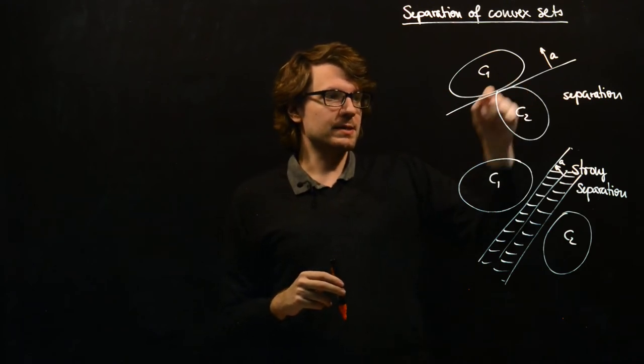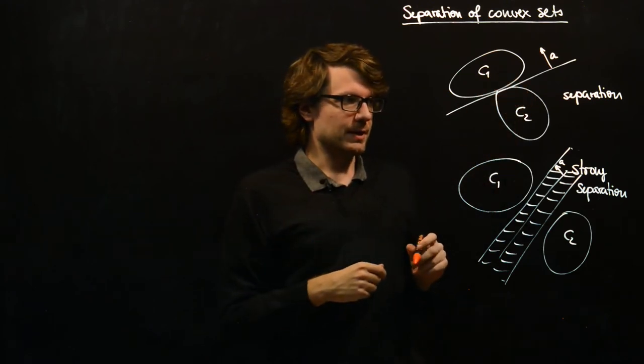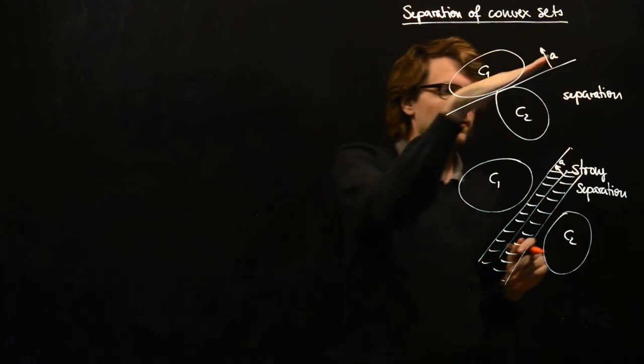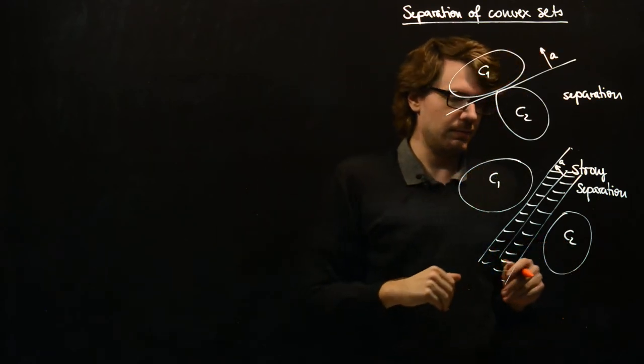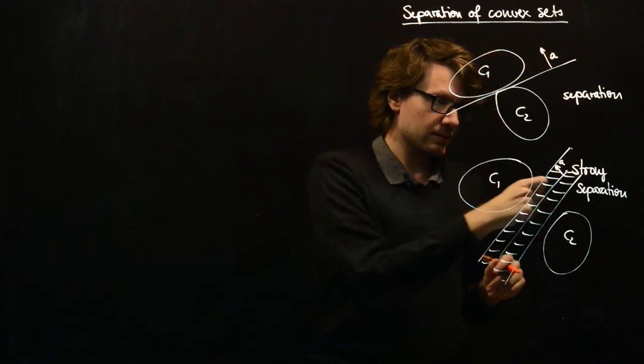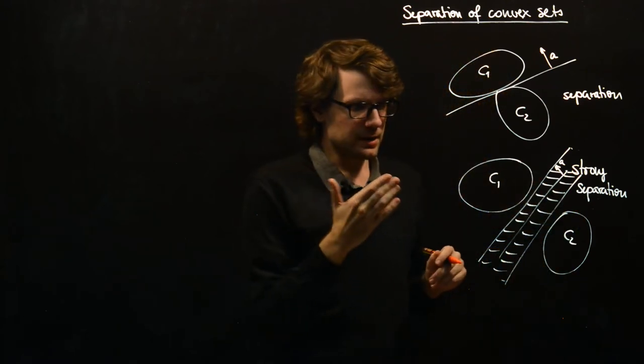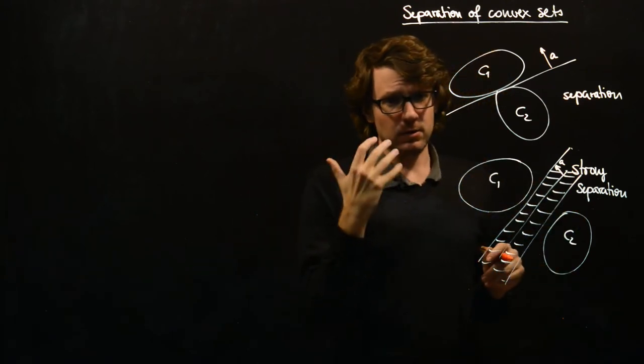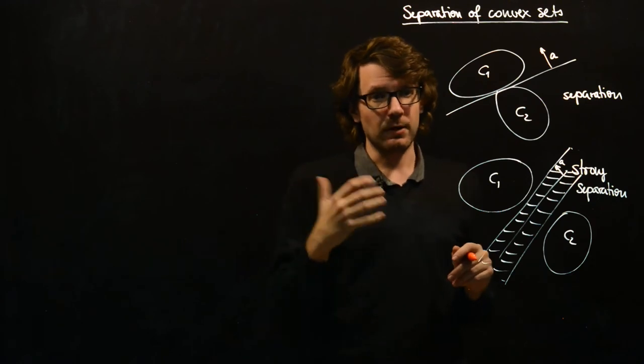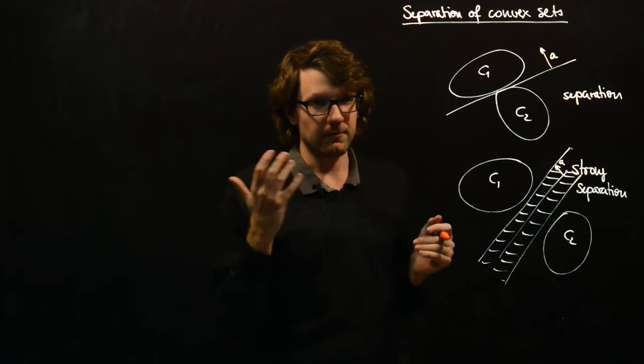Obviously strong separation is a stronger property than separation. Whenever we have an intersection here, we might get a case where we don't find a strongly separating hyperplane. But we will also see that strong separation in general requires one of the sets to be compact or bounded in finite dimensions.